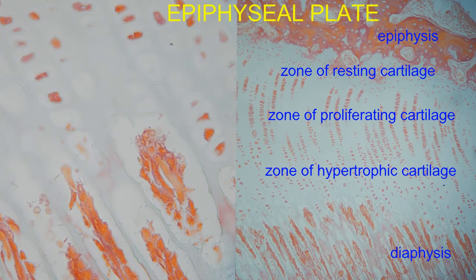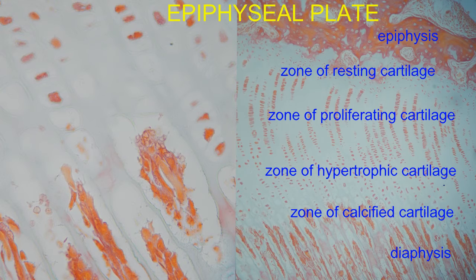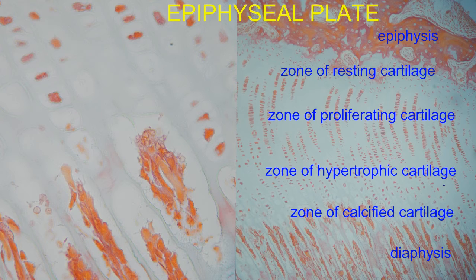In the bone of the diaphysis, osteoblasts and capillaries introduce calcium, which calcifies the matrix of the cartilage. This is a problem for chondrocytes, given that cartilage is avascular, and these chondrocytes rely on diffusion through the matrix to obtain their gas exchange and nutrients. As cartilage calcifies, these chondrocytes die and will ultimately be reabsorbed by osteoclasts, as osteoblasts and capillaries invade the area to replace this dying cartilage with bone. This occurs in the zone of calcified cartilage.